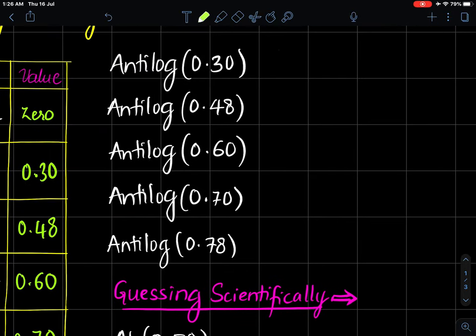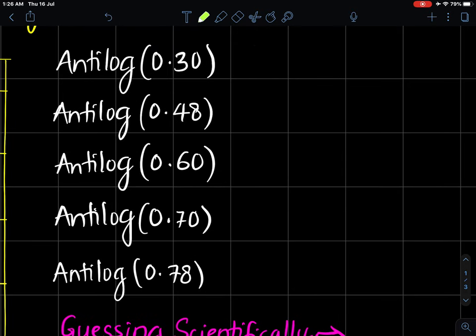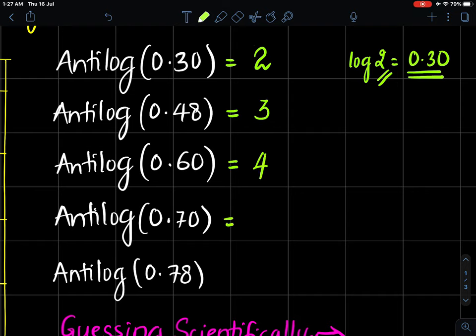So what is the value of anti-log of 0.30? It is 2. How we got? We were aware log of 2 is 0.30, so anti-log of 0.30 is 2. Then what is anti-log of 0.48? You should think whose log is 0.48? It is 3. Then 0.60—whose log is 0.60? Yes, 4. Whose log is 0.70? 5. Whose log is 0.78? 6.